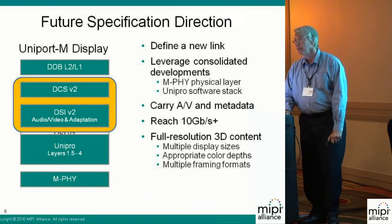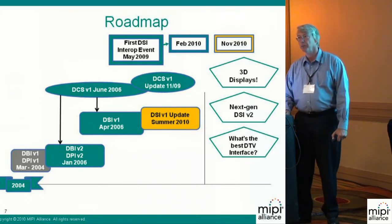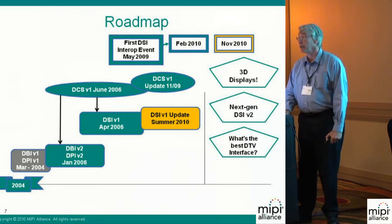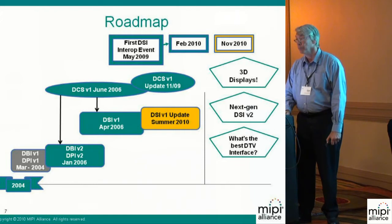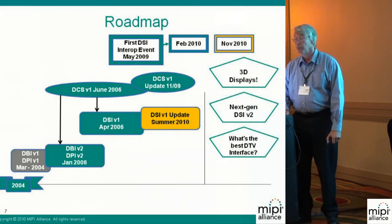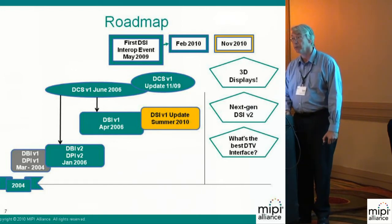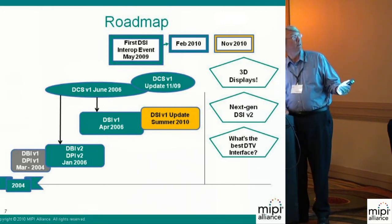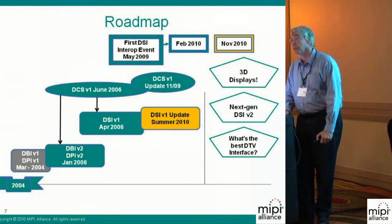That'll take us to the roadmap where we've started. In summary, we've had display parallel interfaces, the DBI and DPI, since 2004. That was revised to what is now recommended in 2006. Also in 2006, work began on the Display Serial Interface. Both the serial interfaces and the command set have been updated recently, just to refine them and add some extra capability. DCS plugs in to both the serial and the parallel, so it's multi-tasked and multi-useful.